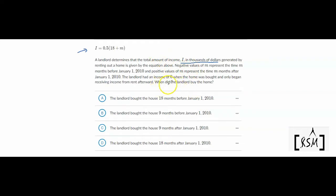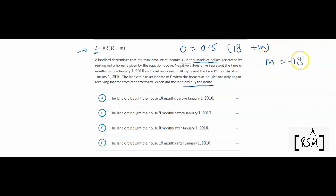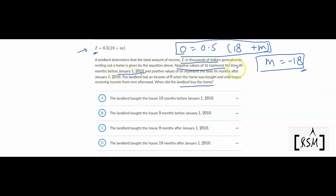We have to find when the landlord bought the home. The time when he bought the home must be when the income is 0, so I value has to be 0. Putting I as 0, we get 18 + M = 0, so M = -18. M = -18 means 18 months before this time. The negative value of M represents the M number of months before this time, so 18 months before January 1st, 2010. Option A should be the right answer.